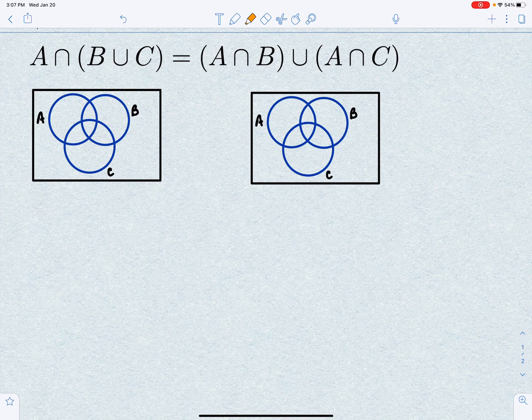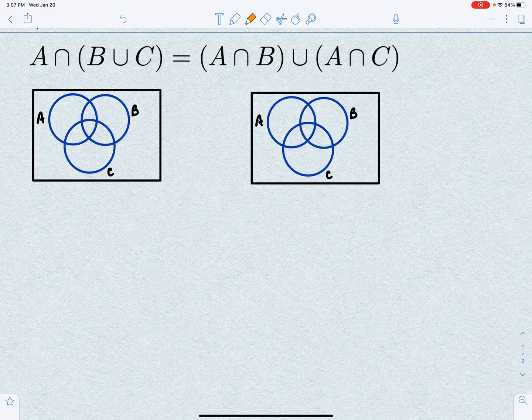So in this video, we're going to use set equivalences to prove that A intersect B union C is equal to A intersect B union A intersect C.